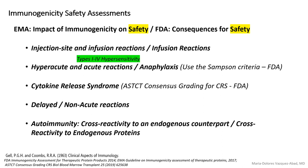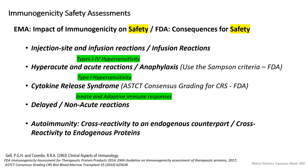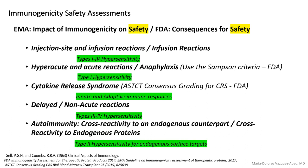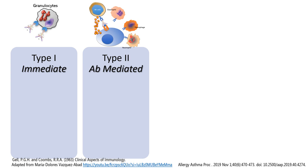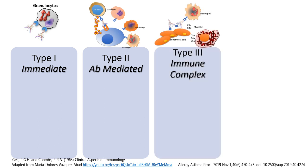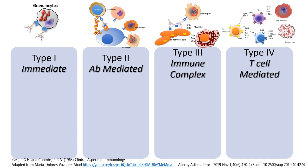The first category corresponds to types one to four hypersensitivity reactions; the second is type one hypersensitivity. Cytokine release syndrome is a response of innate and adaptive immune responses. Delayed or non-acute reactions are type three and type four hypersensitivity reactions. Cross-reactivity to an endogenous counterpart would be a type two hypersensitivity when that endogenous counterpart is a surface target. Type one is an immediate reaction mediated by granulocyte activation, type two is antibody-mediated under several effector cells, type three requires immune complex formation, and type four is T cell-mediated.